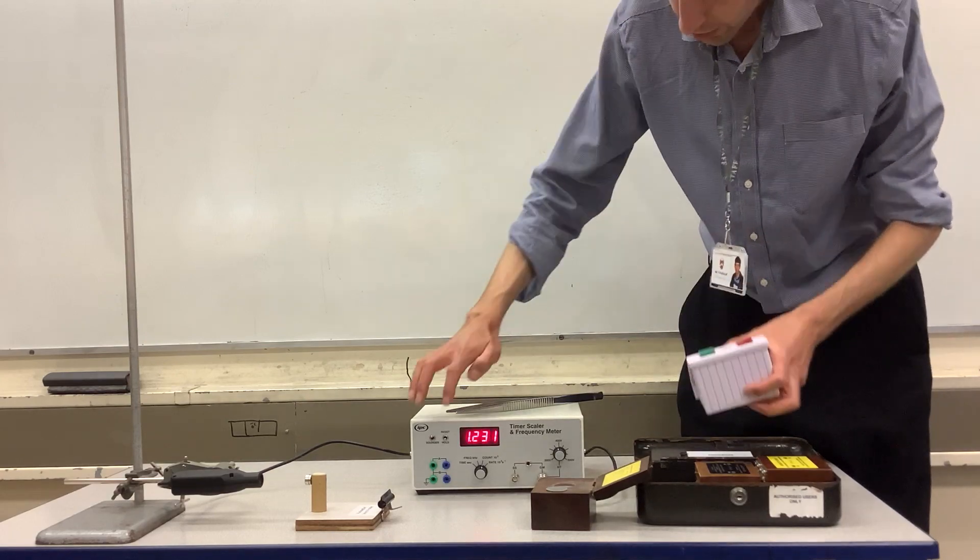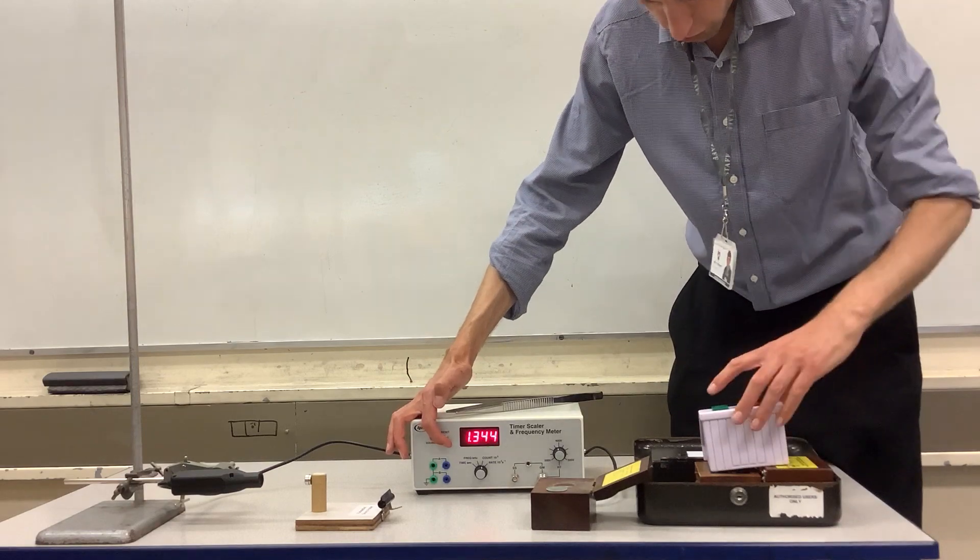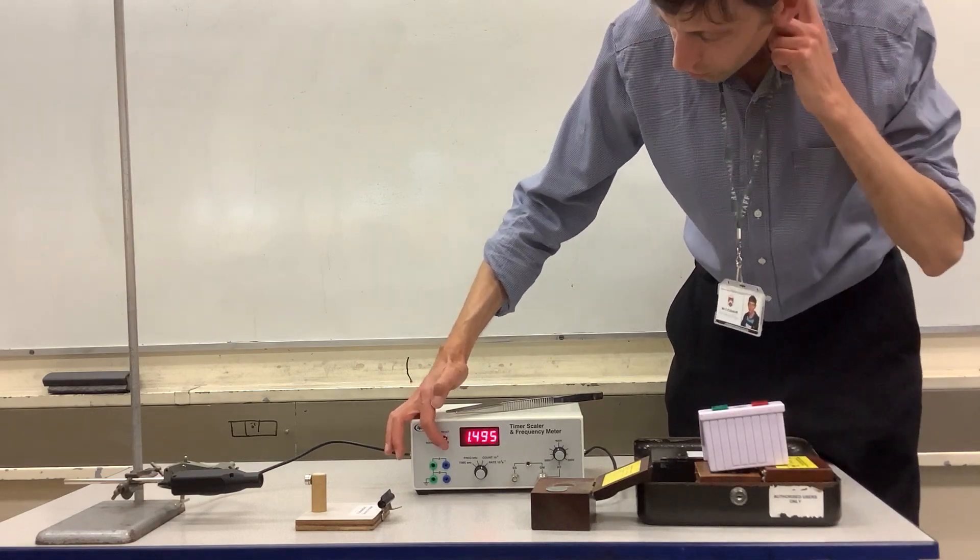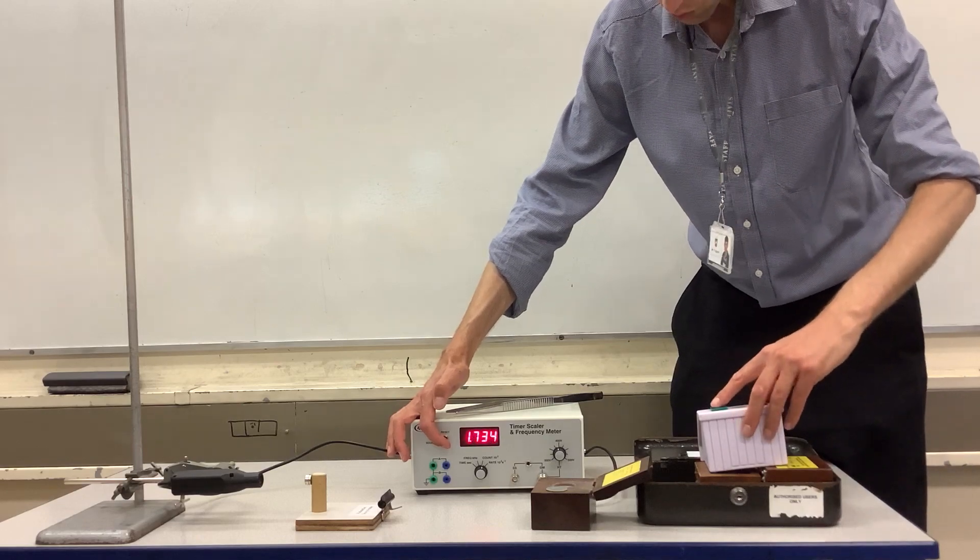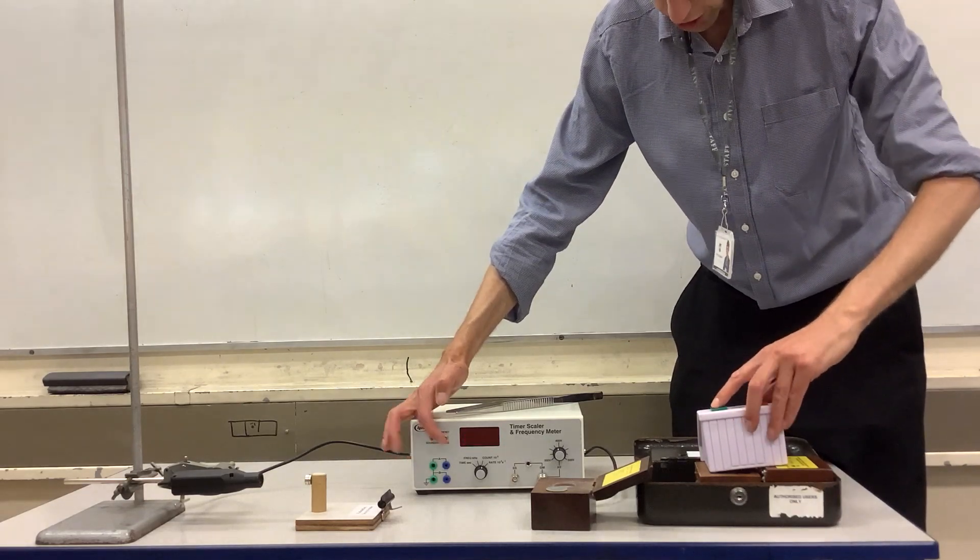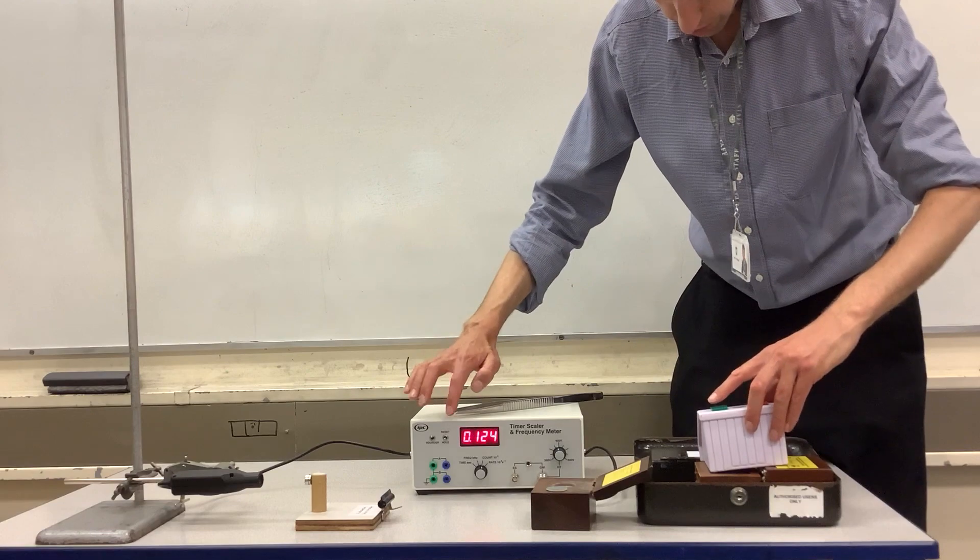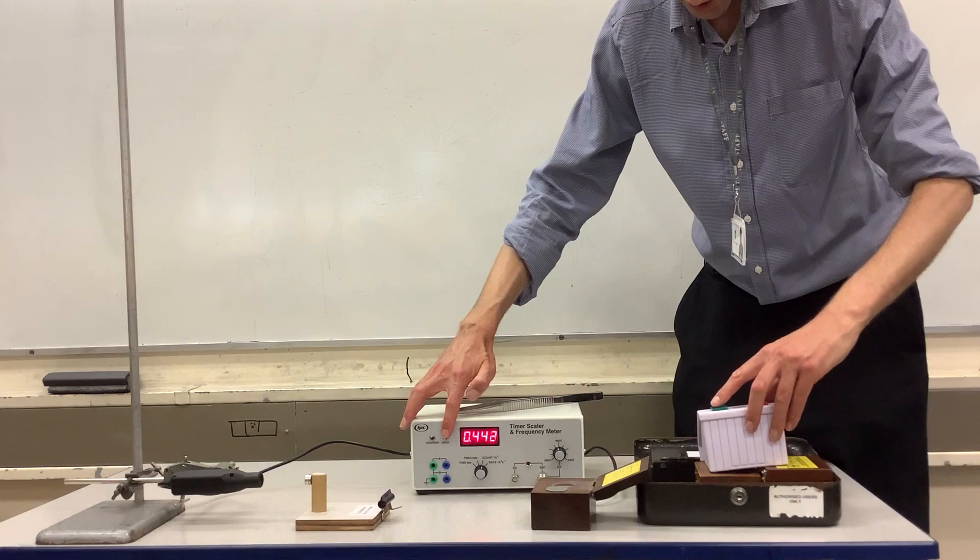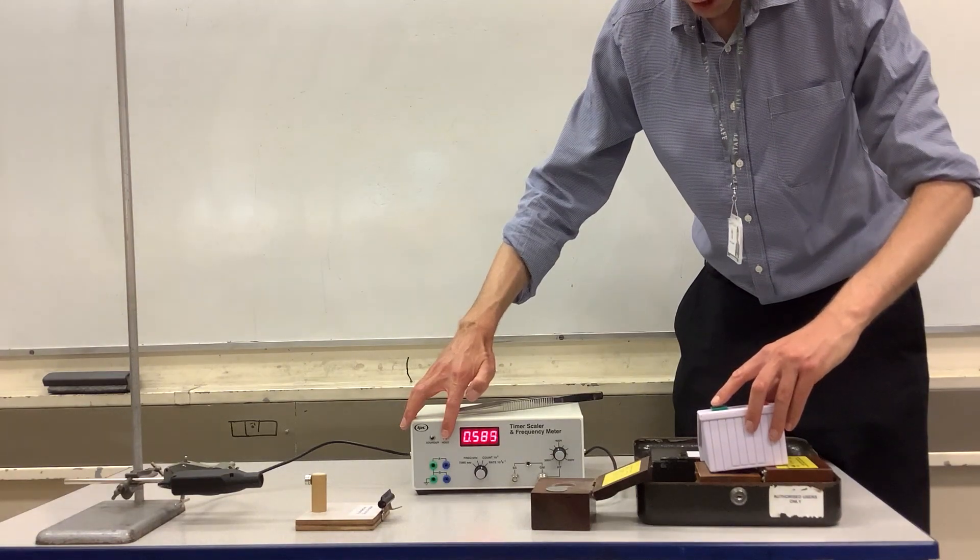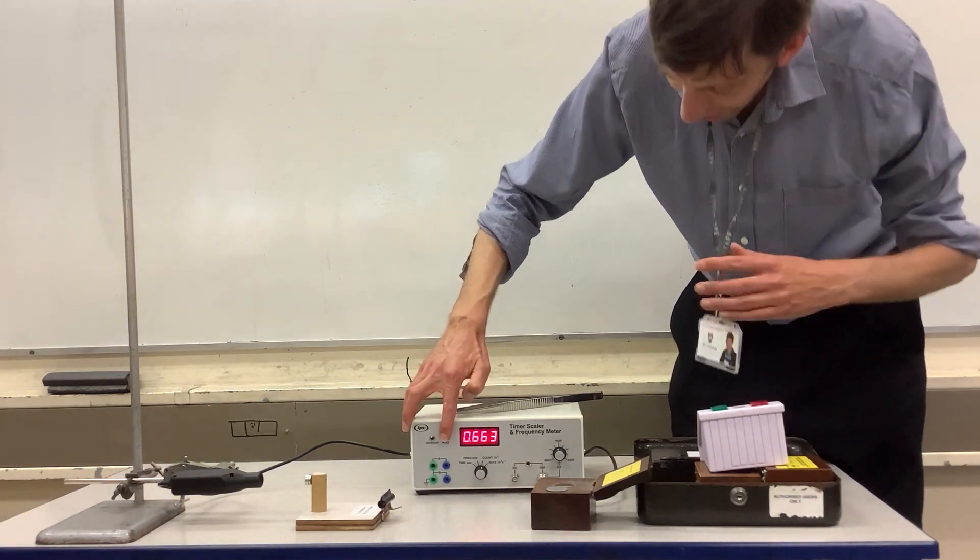I can start this off for the first one, so it will be three, two, one, go. When I'm ready to stop, I'll count it down: five seconds, six seconds, seven, eight, nine, stop. We can see that's 663 counts.